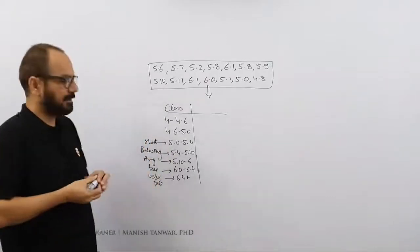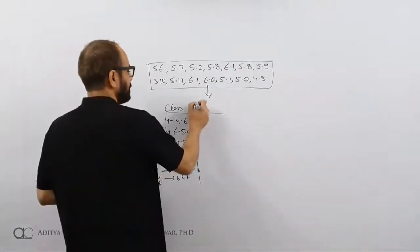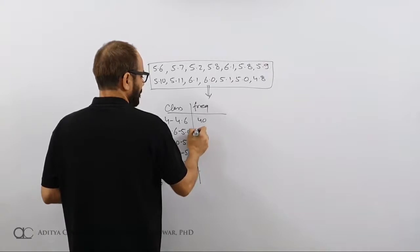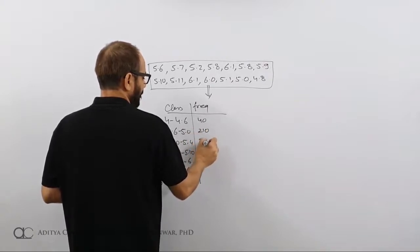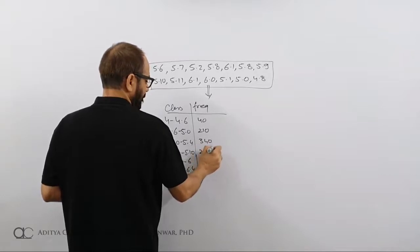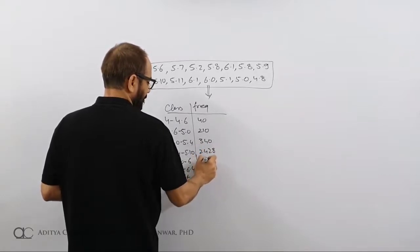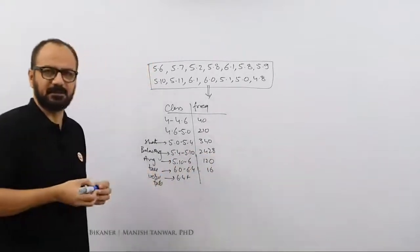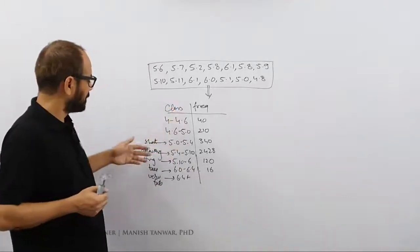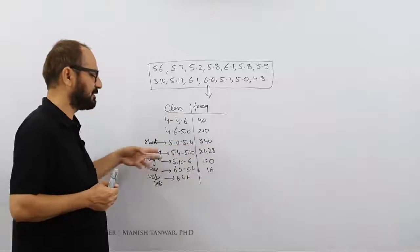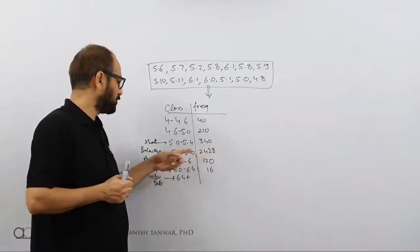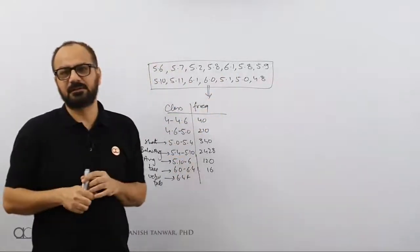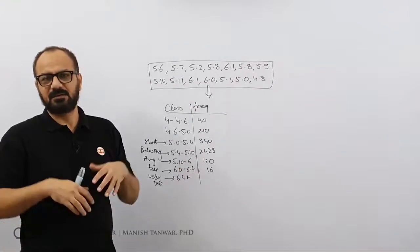So the idea is, now all these classes are making sense. And if I know the frequency, then I get a very good idea that by and large, what is the height that I can expect in a particular city? The majority of the people are having height between 4 and 5.10. Now all this data was not that much worthy of knowledge, not that much useful.